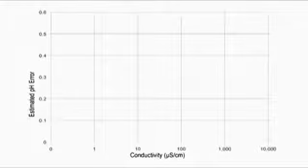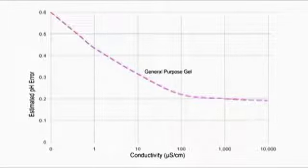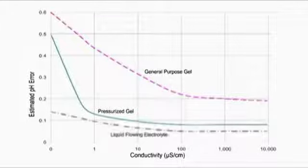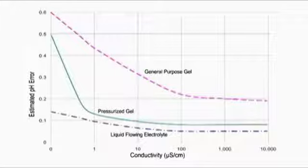There are a variety of pH reference electrodes. As you can see, gel pH sensors provide poor accuracy in very low-conductivity water. Pressurized gel electrodes improve on accuracy and low-conductivity. However, it is widely recognized that a liquid-flowing electrolyte provides the best accuracy in lowest-conductivity samples.